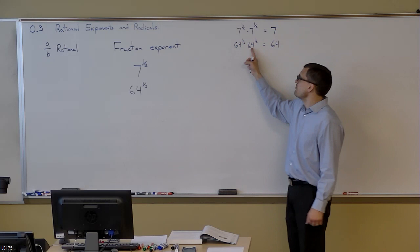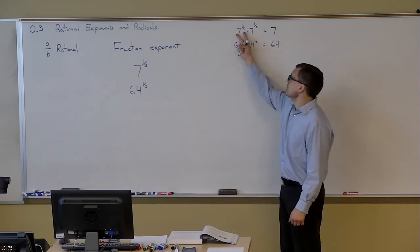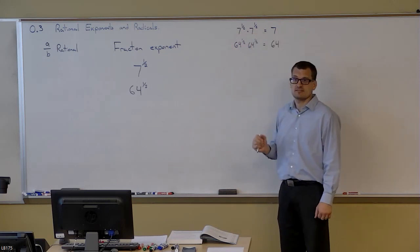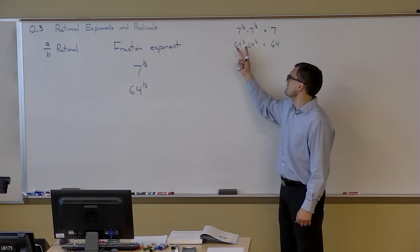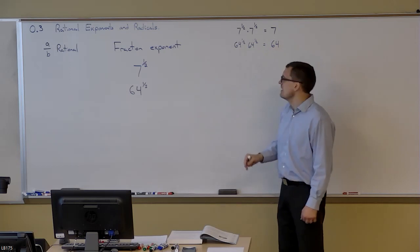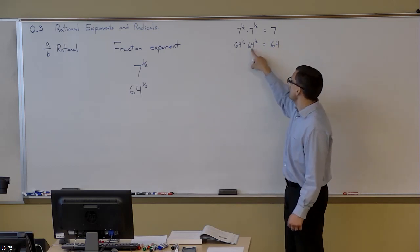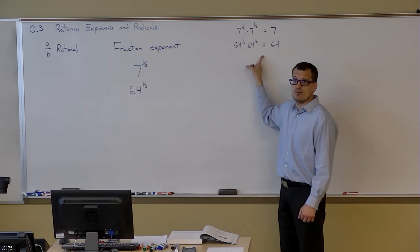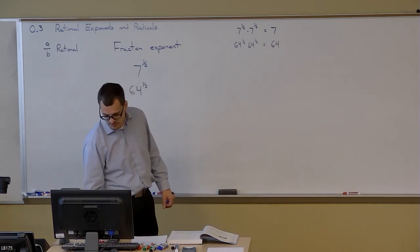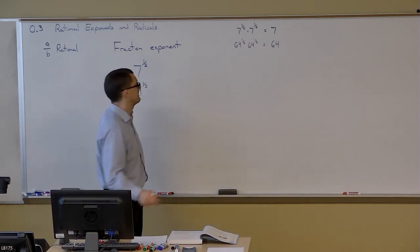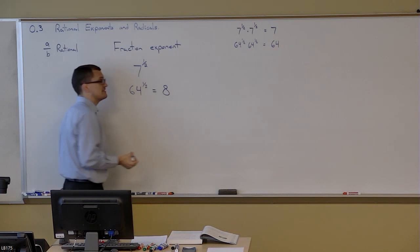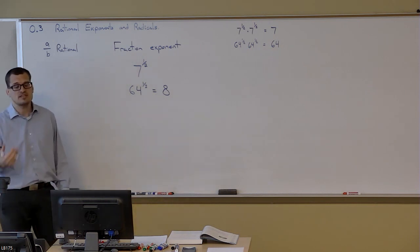A one-half power means that number multiplied times itself will get us back to the base. In this example with 64, what number times itself gets us to 64? Obviously, eight. So 64 to the one-half power is eight, because eight times eight is 64.